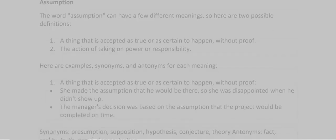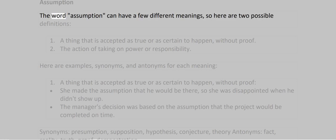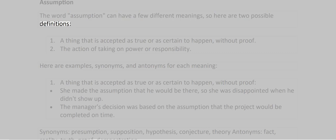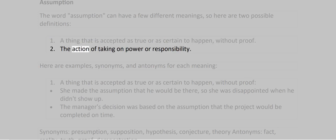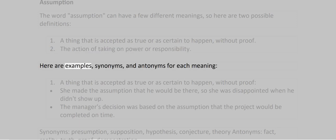Assumption. The word assumption can have a few different meanings, so here are two possible definitions. 1. A thing that is accepted as true or as certain to happen, without proof. 2. The action of taking on power or responsibility. Here are examples, synonyms and antonyms for each meaning.